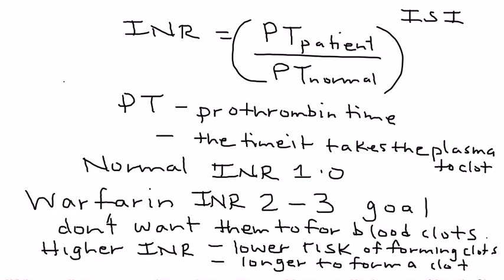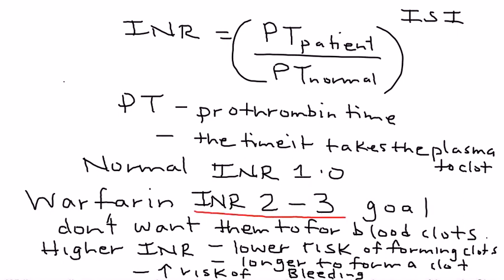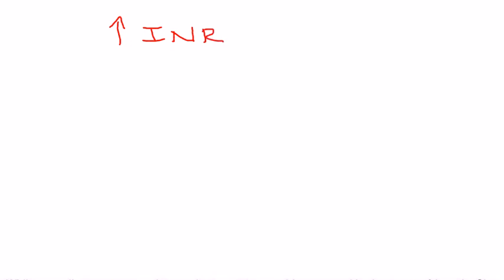Because it takes longer to form a blood clot, the higher the INR, the greater the risk of bleeding. This is a very delicate balance — trying to keep it between 2 and 3. Sometimes the INR does go too high, and when the INR value is above 3, it's known as supra-therapeutic.